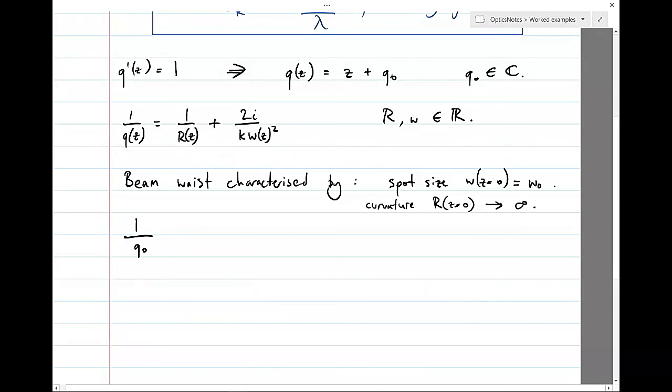A spot size W, which we just conveniently called W0. And the curvature at the origin went to infinity. So we had planar wave fronts at the beam waist. We can just substitute these into the expression for 1 on Q and see what we get.